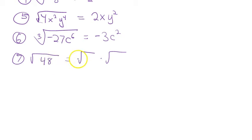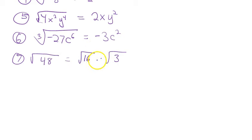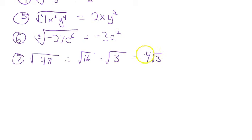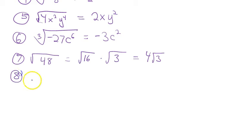Always put the biggest perfect square in the first square root. 16 times 3 is 48, so square root of 48 becomes the square root of 16 times the square root of 3. The square root of 16 is 4, so that operator goes away, and the 4 is no longer under a square root. The 3 remains under the square root, giving you 4√3 as the exact answer.